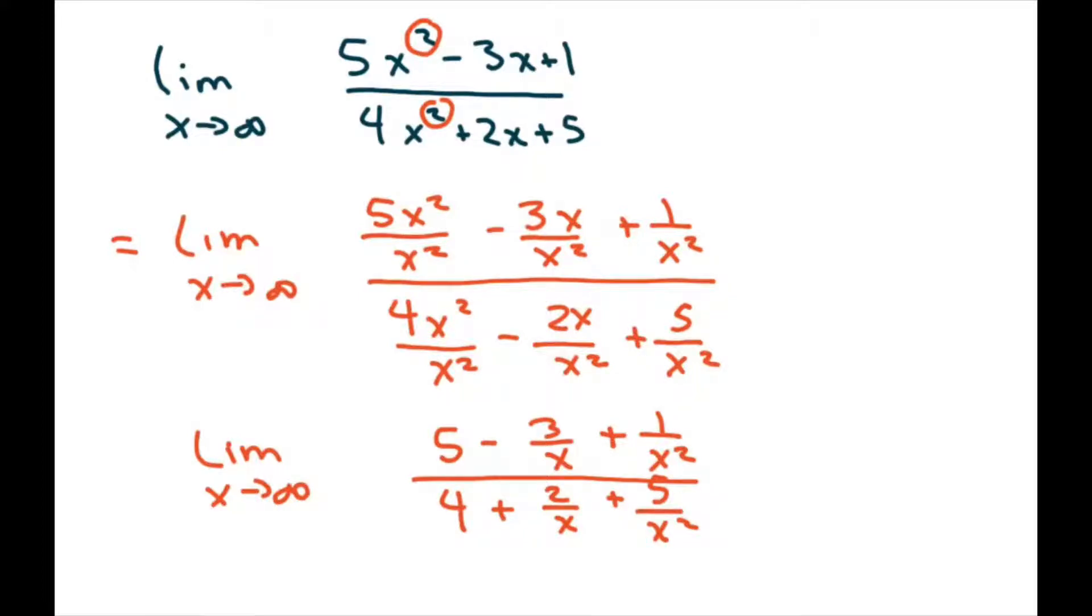Now we take the limit. So as you recall, when you take the limit as x tends to large over some constant over x to any nth power, this equals 0 if your n is positive.